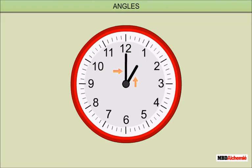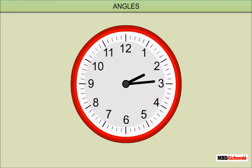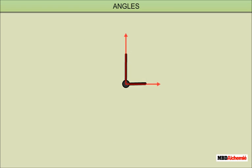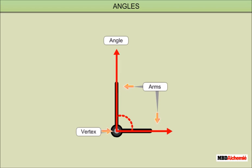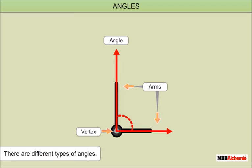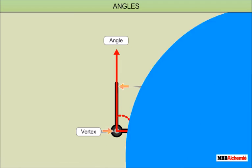Have you ever observed the hands of a clock? The two hands are at different positions at different points of time as they move along the dial. The two hands represent two rays meeting at a point. When two rays have a common endpoint, they form an angle. The two rays forming an angle are called the Arms of the Angle, and the common endpoint is called the Vertex of the Angle. There are different types of angles.